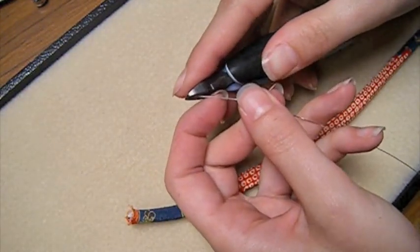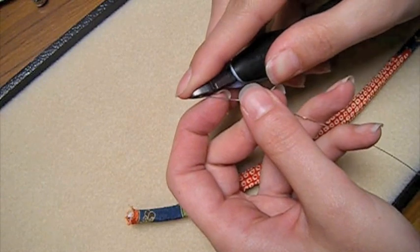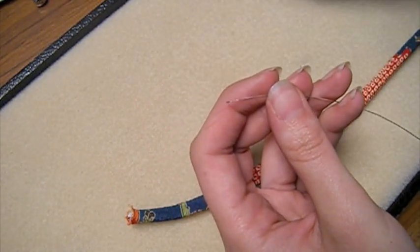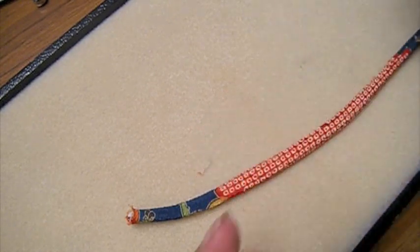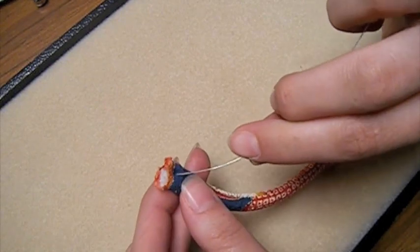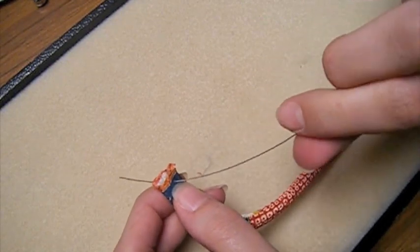And to start with you want to cut the tip of the wire at an angle so that it is pointed. Be careful about sharp objects flying off and hitting yourself in the eye or others. So you start, you pierce the cord about a quarter of an inch down.